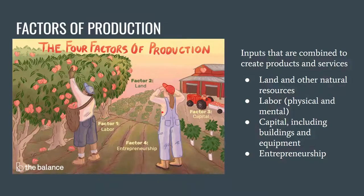The next term is factors of production, probably the most difficult one to recall as it includes a lot. There are four main components — four different inputs that are combined to create products and services. Those are land, labor, capital, and entrepreneurship. You may also see a fifth one listed as technology, though we're not going to dive into that today.